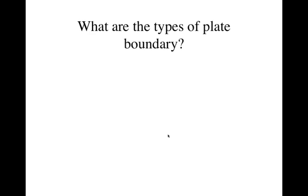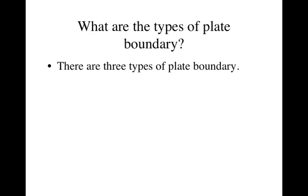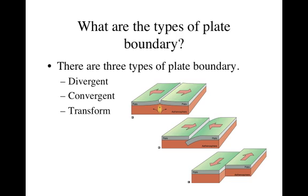So what are the types — what types of plate boundaries do we have? There are actually three of them. They are totally separate, totally unique. One is called a divergent plate boundary. The other two are convergent and transform, and they look kind of like this. So we are going to go through them one by one, and we will start with the divergent plate boundary.